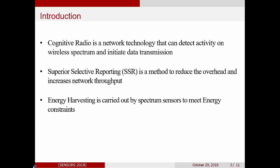So cognitive radio is a network technology which senses the channel, detects activity on the channel, and initiates data transmission. So the goal is to determine if the channel is being used or not, and then maximize the data which is transferred.